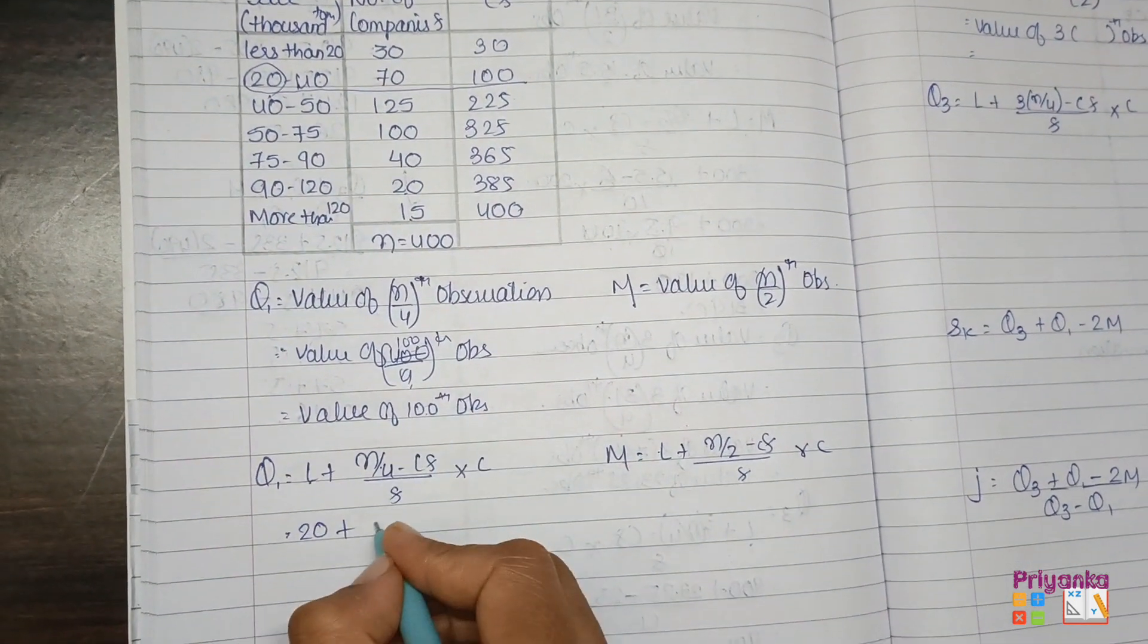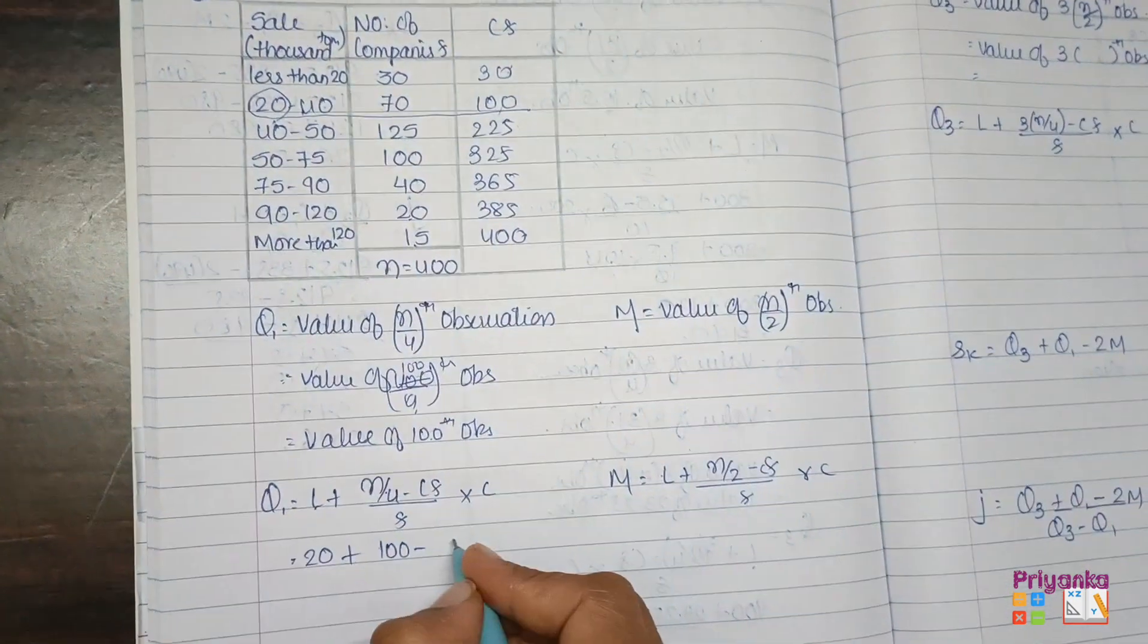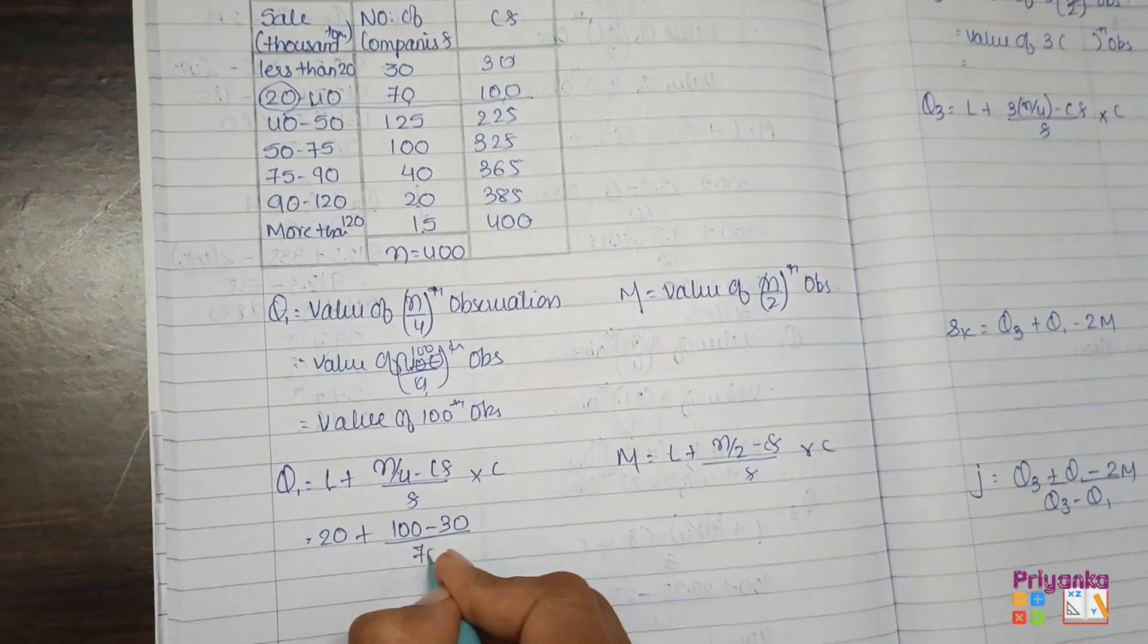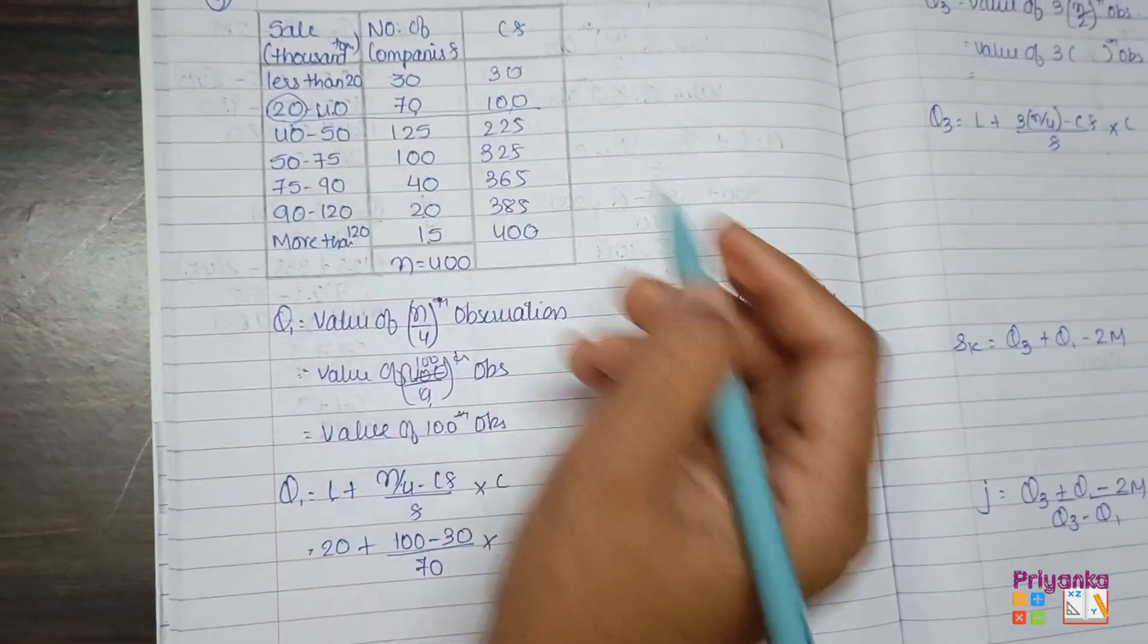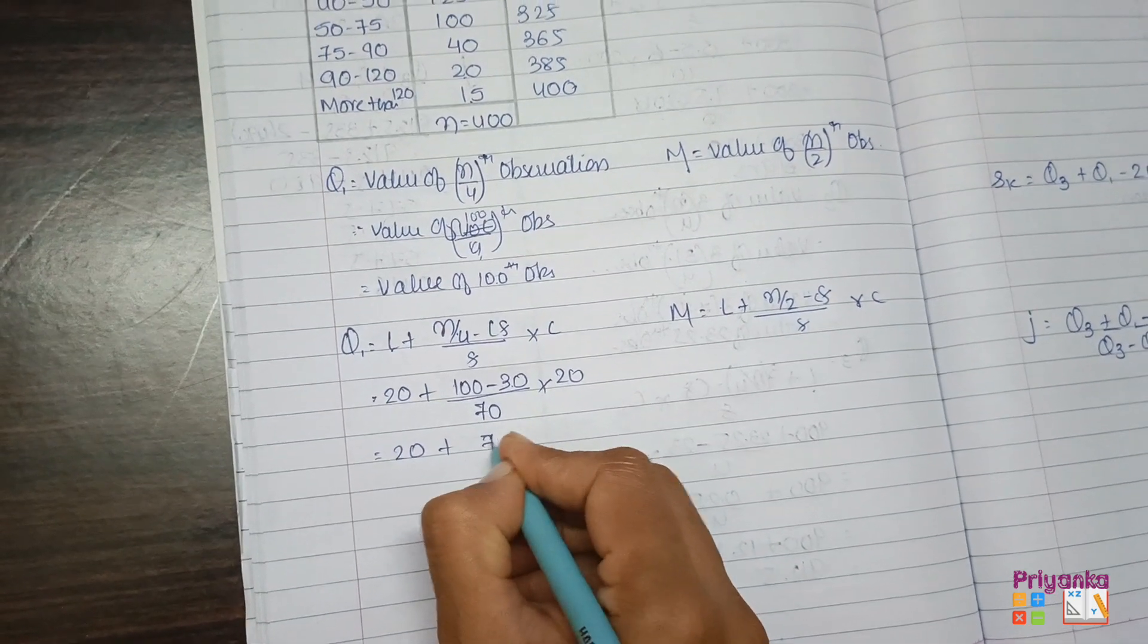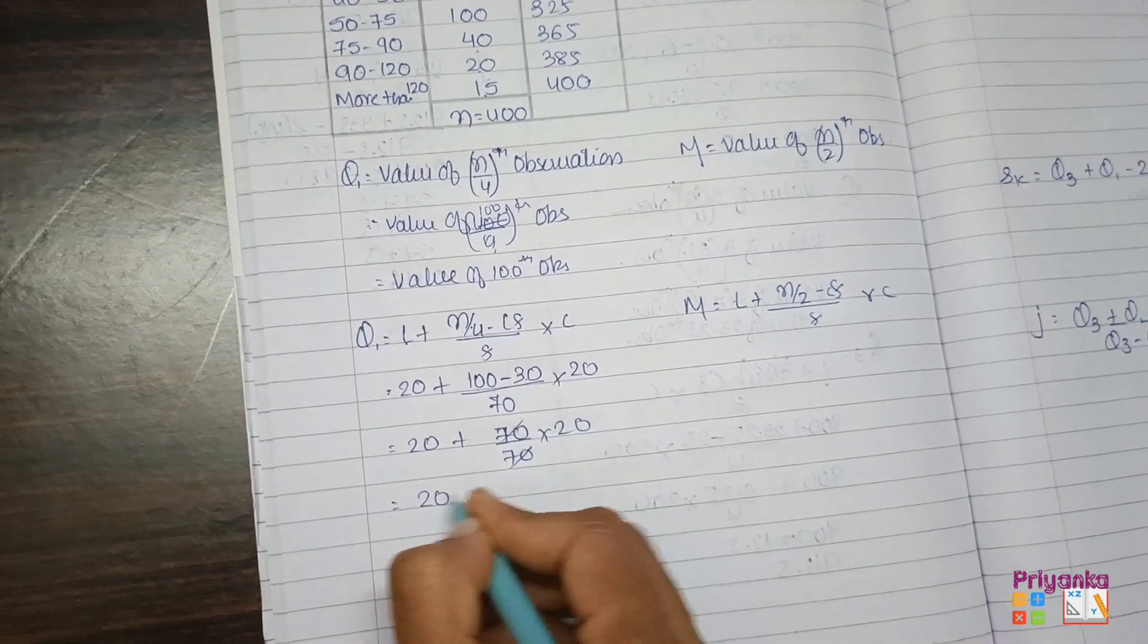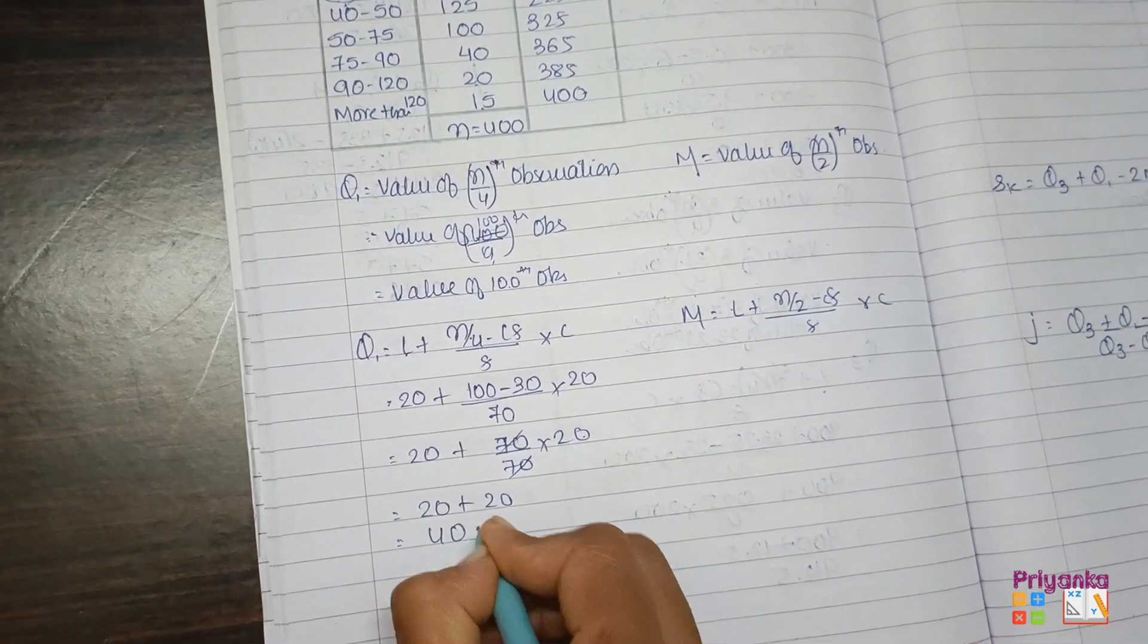So CF which we found just now is 100. Minus CF is 30. Frequency is on the dragging line, 70. Or C, that is 20 minus 40, which is 20. So here we get 20 plus 100 minus 30 will be 70 upon 70 into 20. So 20 plus 20 will be 40.